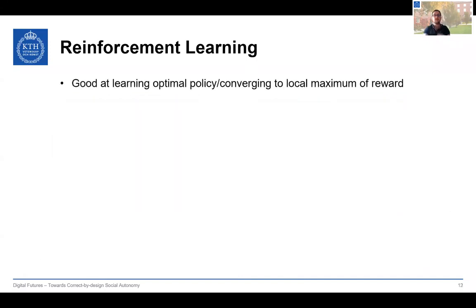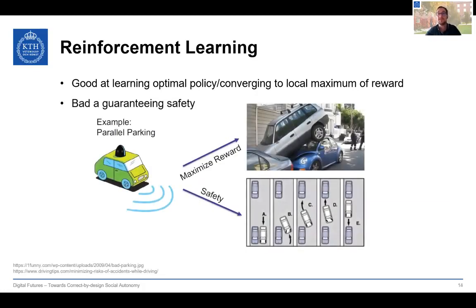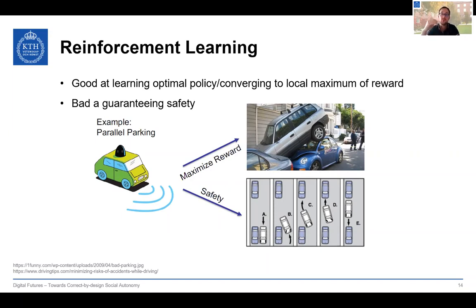Reinforcement learning is good at learning an optimal policy that converges to a local maximum of reward, but it is usually bad at learning safety. Consider the case of parking: if you want to maximize the number of cars parked in the street but do not explicitly specify that parking is in 2D and not 3D, you may end up with interesting but incorrect solutions. This illustrates that we need to include safety constraints in the reinforcement learning loop, and this also holds for social aspects and trustworthiness.